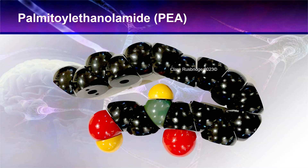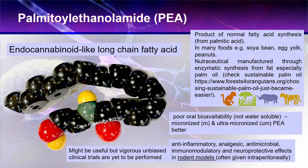We're talking about palmitoylethanolamide, or PEA, and it's used for management of neuropathic pain in animals. It's a long-chain fatty acid which has some endocannabinoid-like actions. The molecule's carbon chain represents the fatty acid, with a more active portion. It's a product of normal fatty acid synthesis coming from palmitic acid, and you find it in many foods — the most commonly quoted are soybeans, egg yolk, and peanuts.